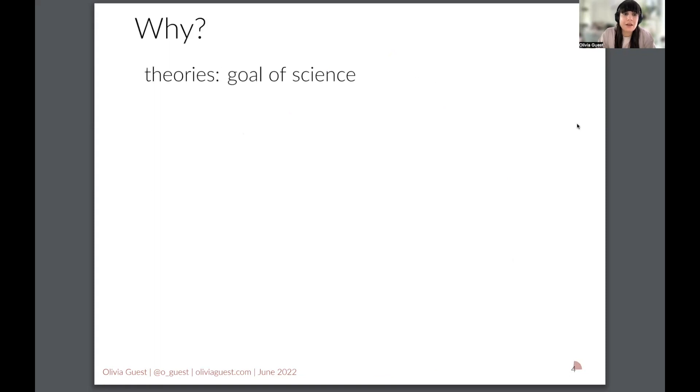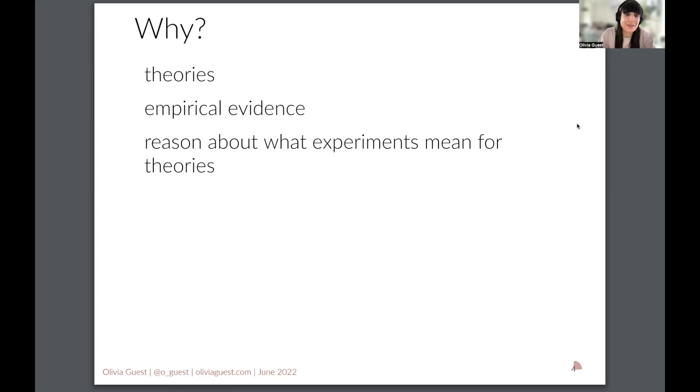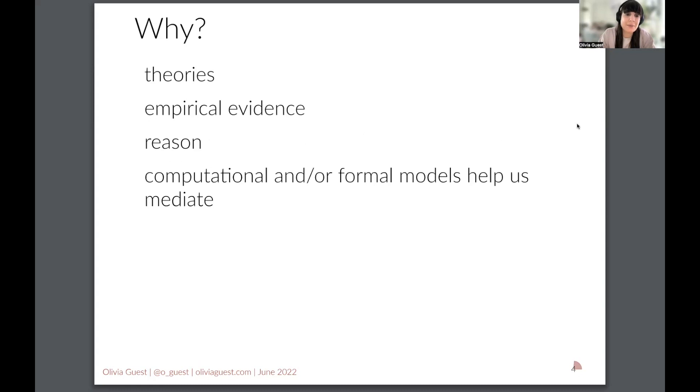I think theories are essentially the goal of science and empirical evidence is used to support, test, improve, demolish our theories. And what we do is reason about what empirical evidence might mean for our theories. That's one thing that we do in science and the way that we do it is quite often by using formal or computational or both models, different types of models essentially to mediate between the theory and the empirical evidence.